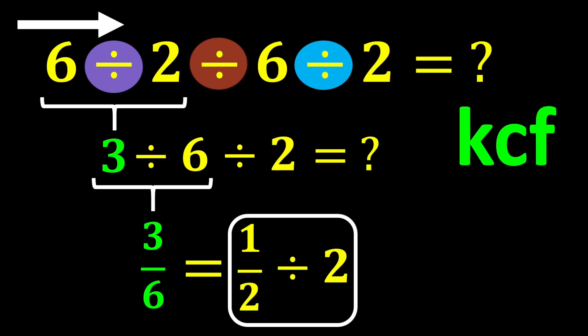To solve this part of the question, we use the KCF rule. K stands for keep, C stands for change, and F stands for flip. Here's how it works: keep the first number as it is, change the division sign to multiplication, flip the second number, and take its reciprocal.